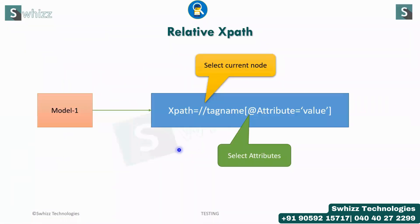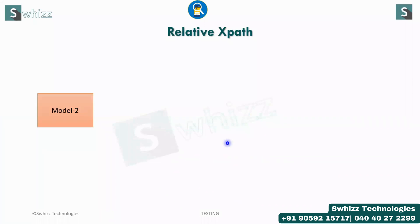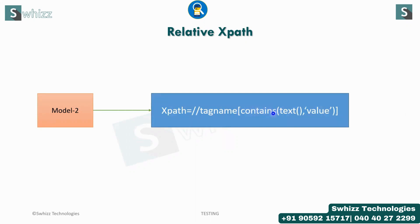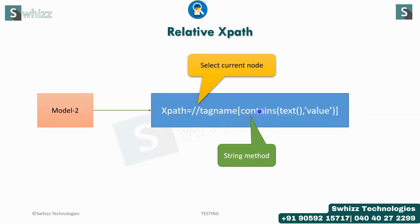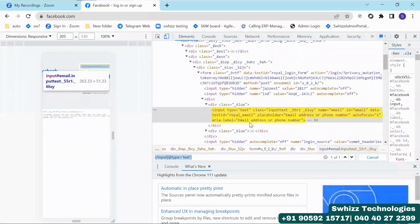Now let's understand the second type. This is simple again — the concept is almost the same. But here, instead of the attribute, you can also use the text. This 'contains' method is similar to the contains method in Java string concepts we discussed earlier. What the contains method does: in that particular element or attribute, whatever value is present, exactly that sequence should be matched. Where do we use this? Here you are having different attributes with key-value pairs. Sometimes you may not have the key and value.